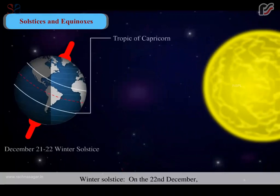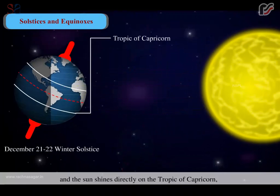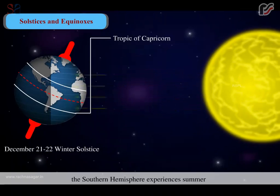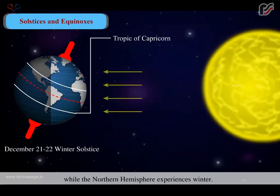Winter solstice: On the 22nd of December, when the south pole is tilted towards the sun and the sun shines directly on the Tropic of Capricorn, the southern hemisphere experiences summer, while the northern hemisphere experiences winter.